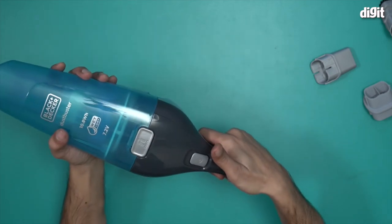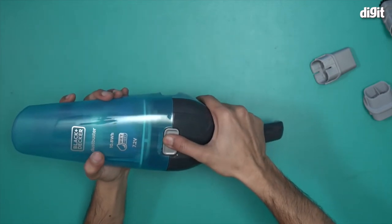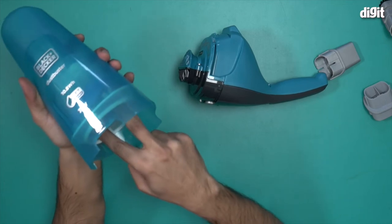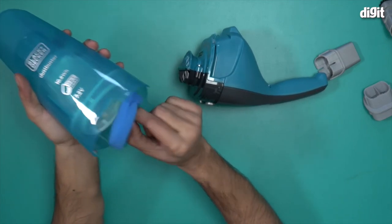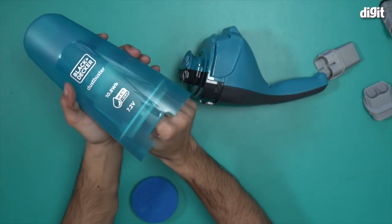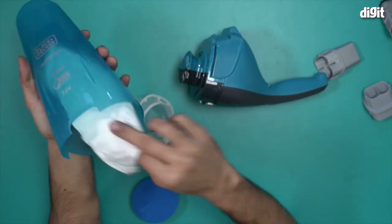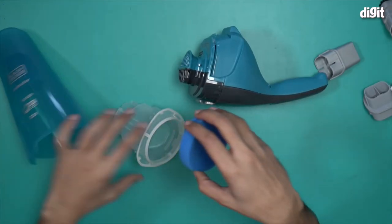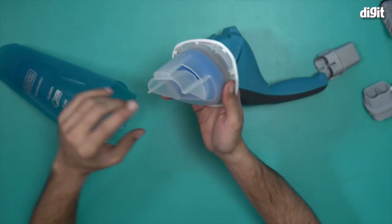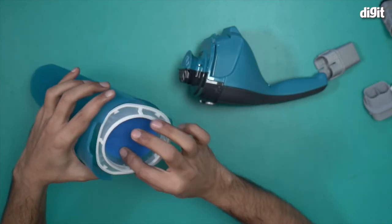There you go, it's gone. Now let's try to retrieve it. And here it is. So the filter gets attached over here, and this is basically your vacuum cleaner component that gets attached over here.